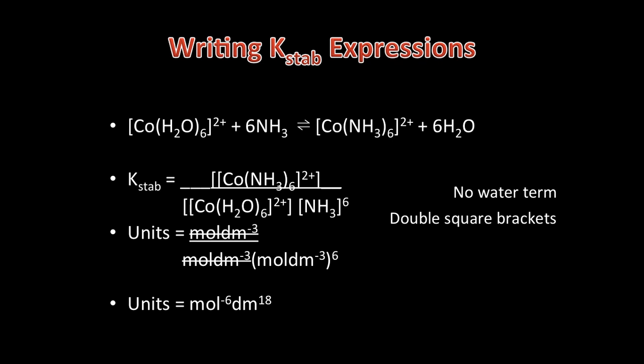Looking at an example with the cobalt hexa aqua ion with excess ammonia, as with all equilibrium constant expressions, the products are written at the top of the expression and the reactants below. As there are 6 ammonia molecules, the concentration of ammonia is written to the power of 6.